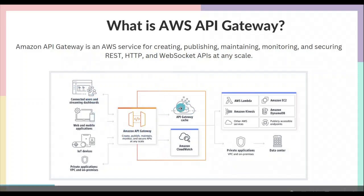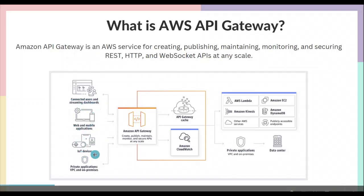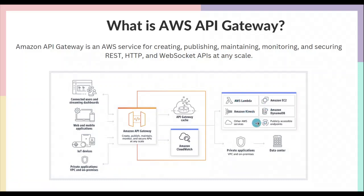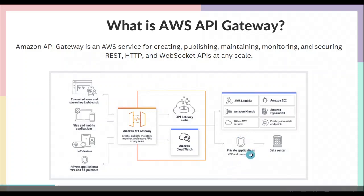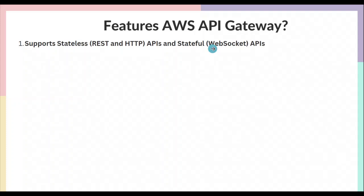Amazon API Gateway sits between your users or clients and your back-end applications. Your clients can be connected users, streaming dashboards, web or mobile applications, IoT devices, or private applications. On the back-end, your applications can run anywhere — you can integrate with any AWS services, or with private applications running on a VPC or on-premise. The advantage of using Amazon API Gateway is easy integration with AWS services; if your application runs on EC2, Lambda, or Amazon ECS, you can forward requests to them easily.